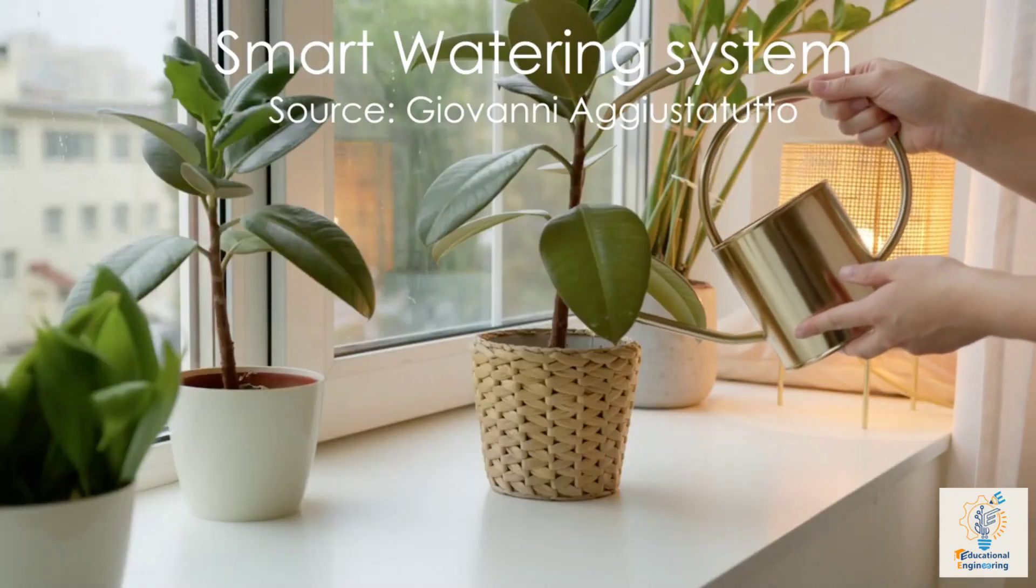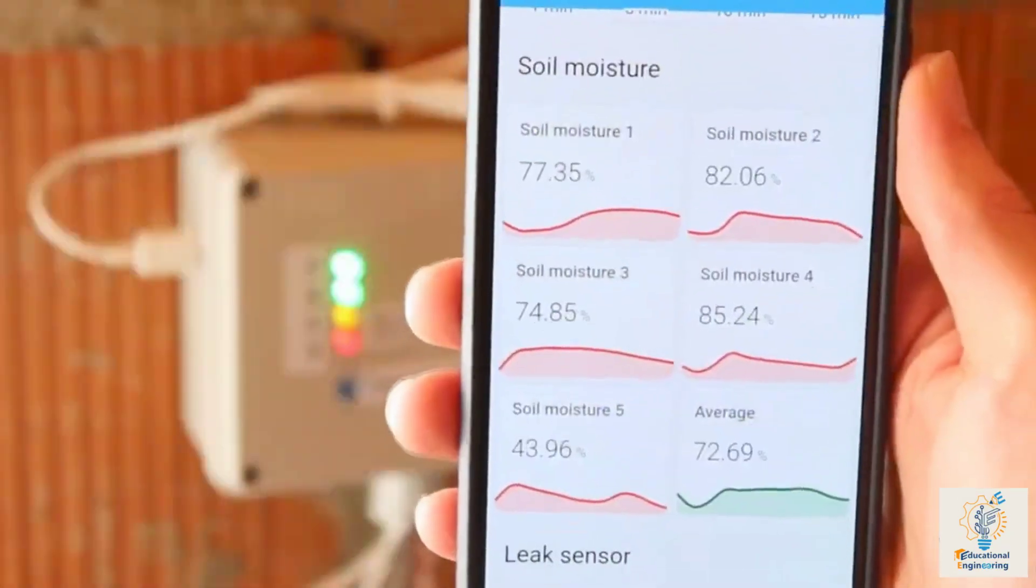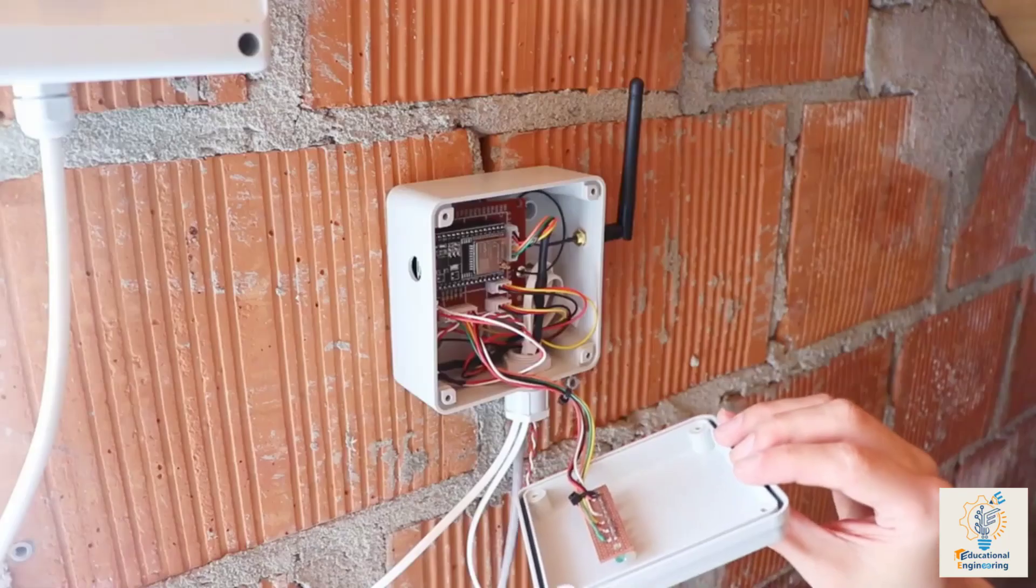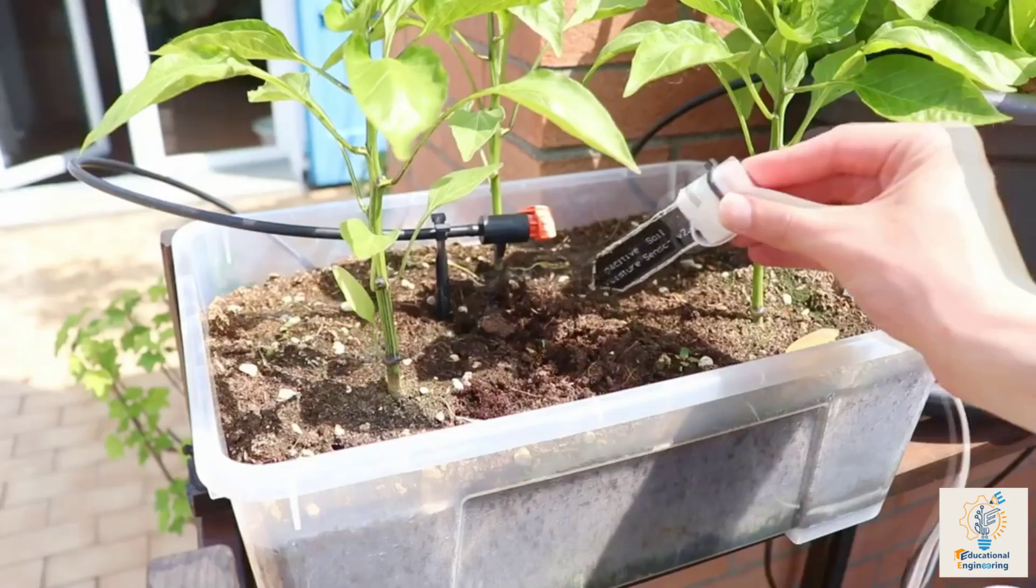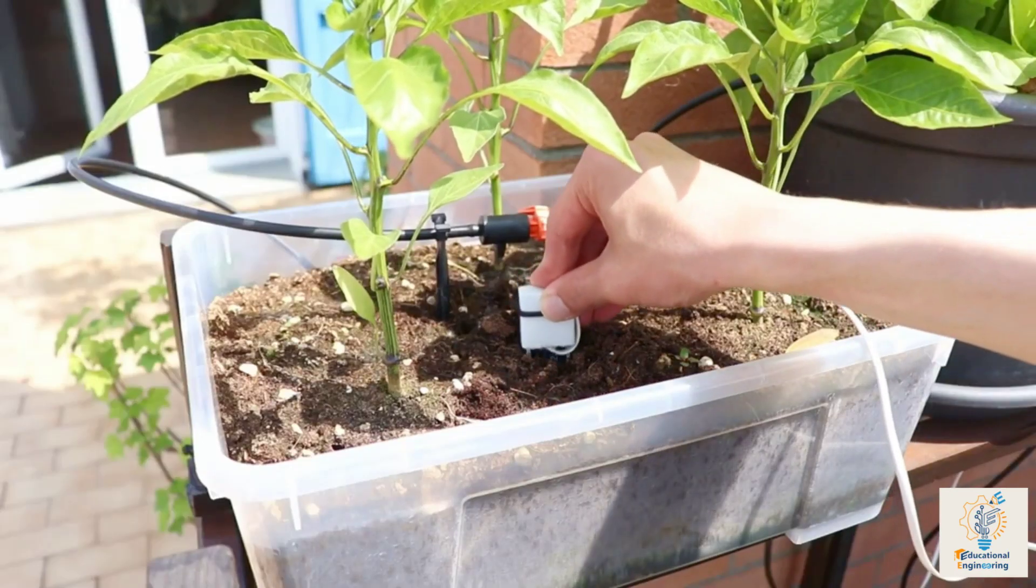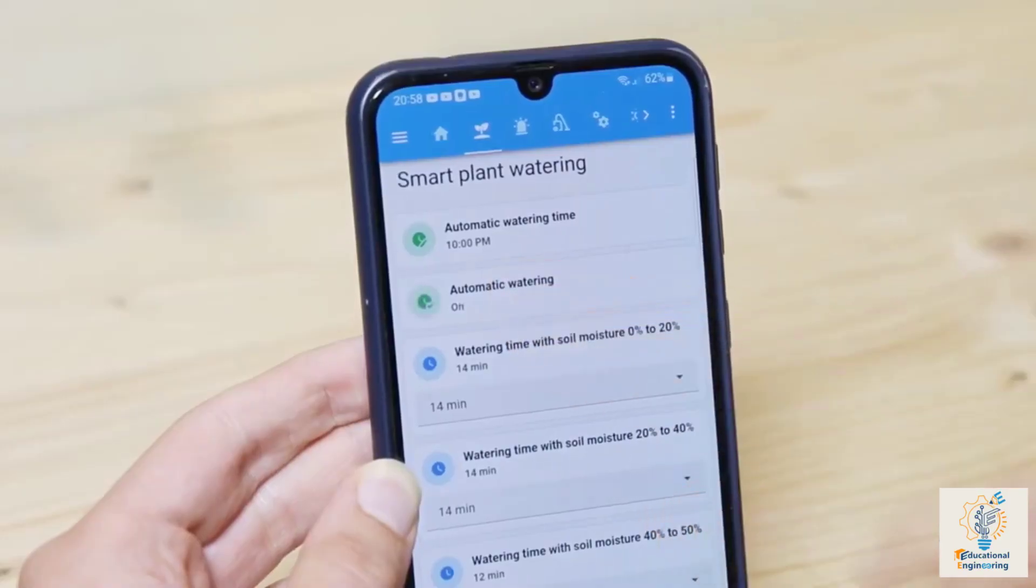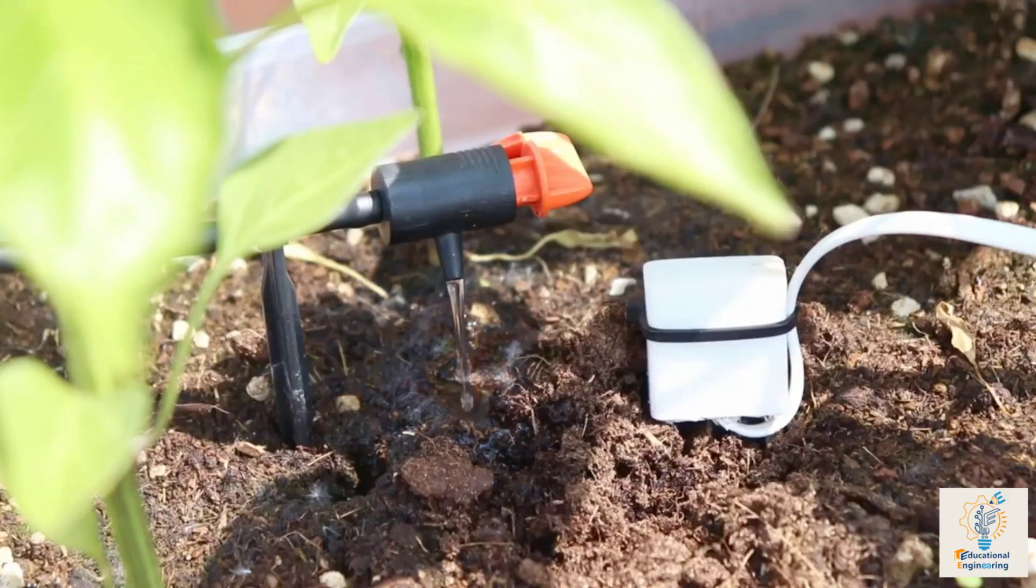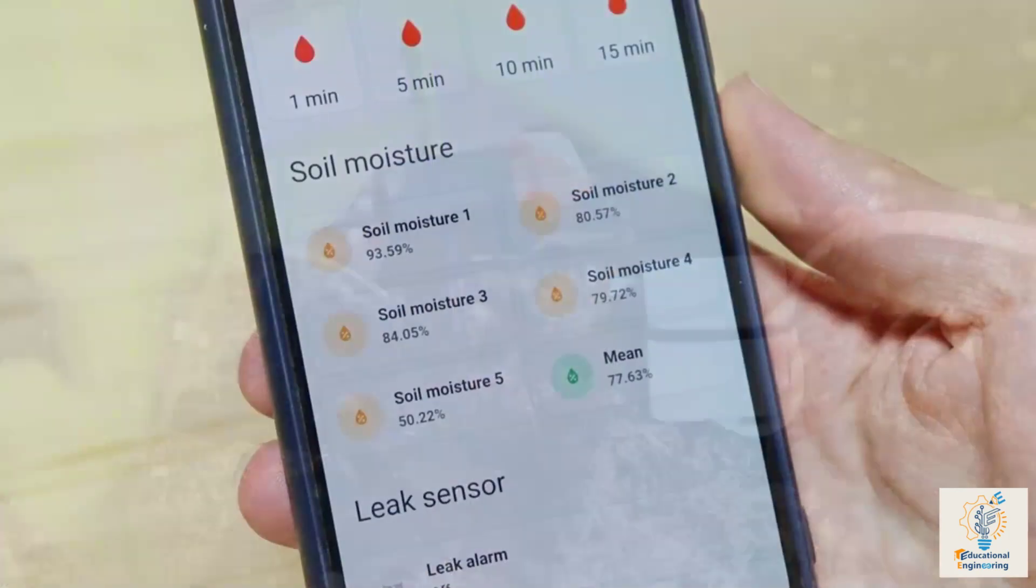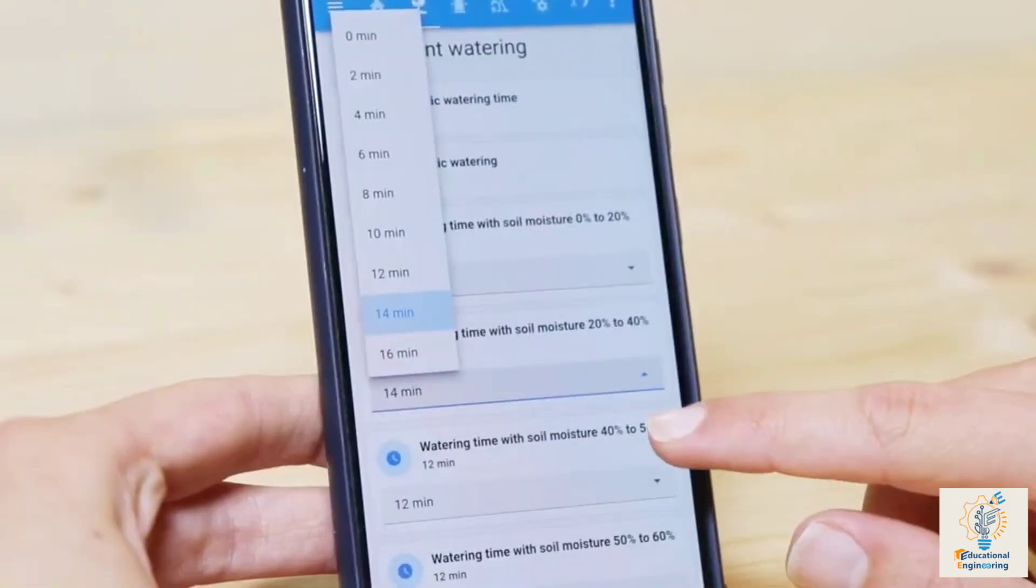If you usually forget to water the plants on time, or are worried about water wastage, then this smart watering system can help. It's an all-in-one solution made by Giovanni that first checks the soil moisture and displays the data on a dashboard. From this data, the automation system calculates the time to open and close each valve to water the plants, thus avoiding water wastage. All this data can be viewed on the dashboard, and can be varied if necessary.